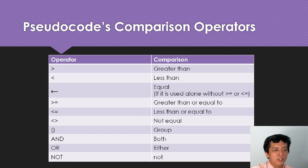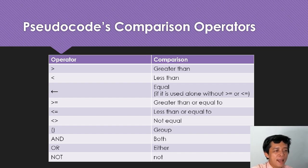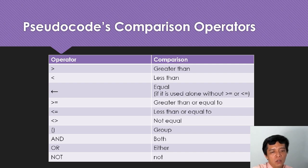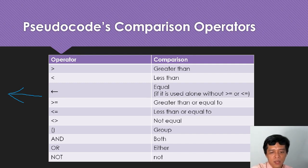The next one is pseudocode comparison operators. These are similar to math: greater than, less than. This one is equals to. But if it's used alone as just equals to, then it changes to the left-arrow symbol. Remember that - people will know this is a pseudocode.